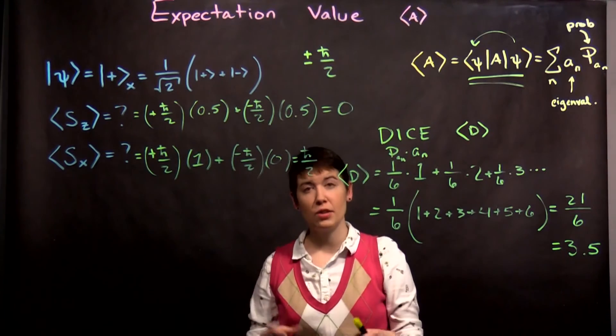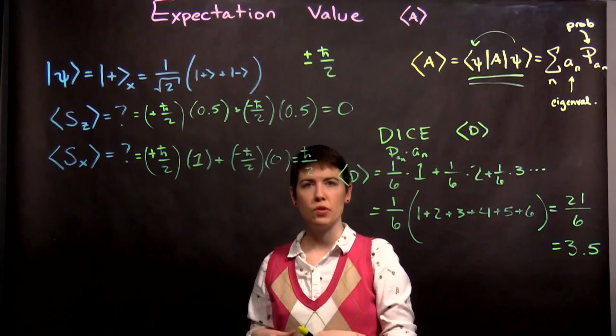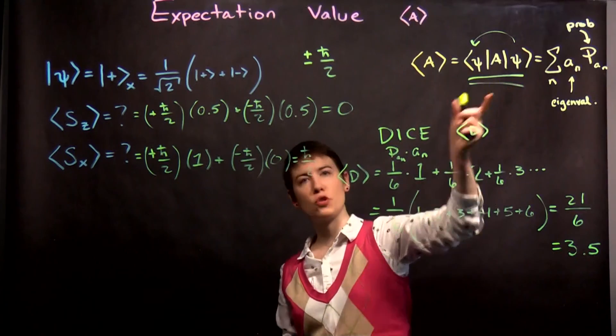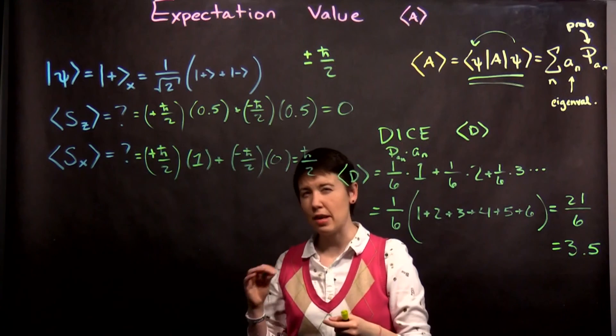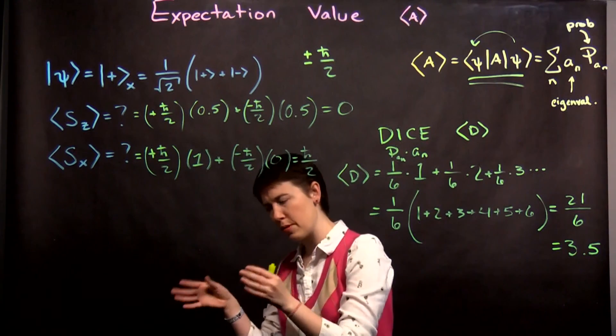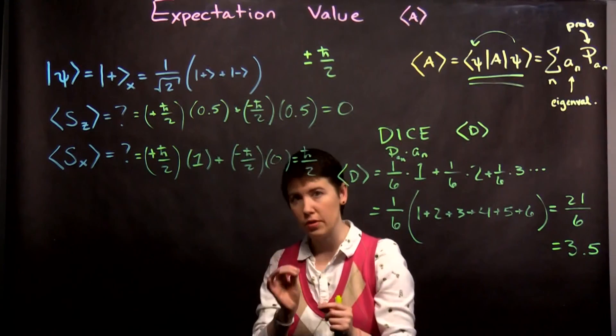This is the idea of expectation value. If you have met it in classical systems or normal probability, same thing. We have this version of it now. If you haven't met it before, think about it as an average, but really understand that distinction of the average of a bunch of measurements versus each individual measurement. It's pretty fundamental.